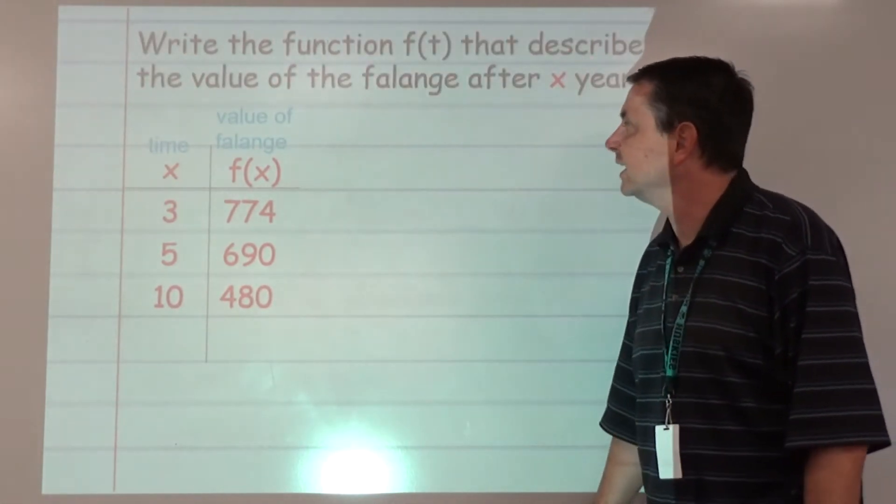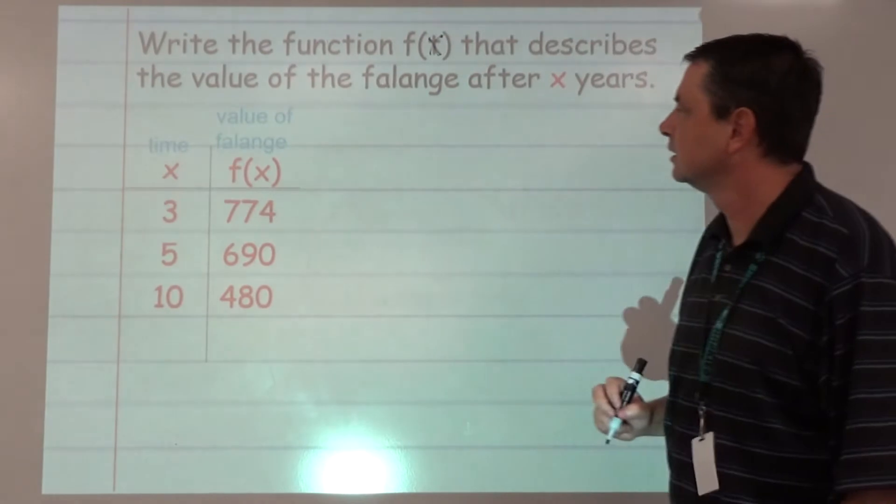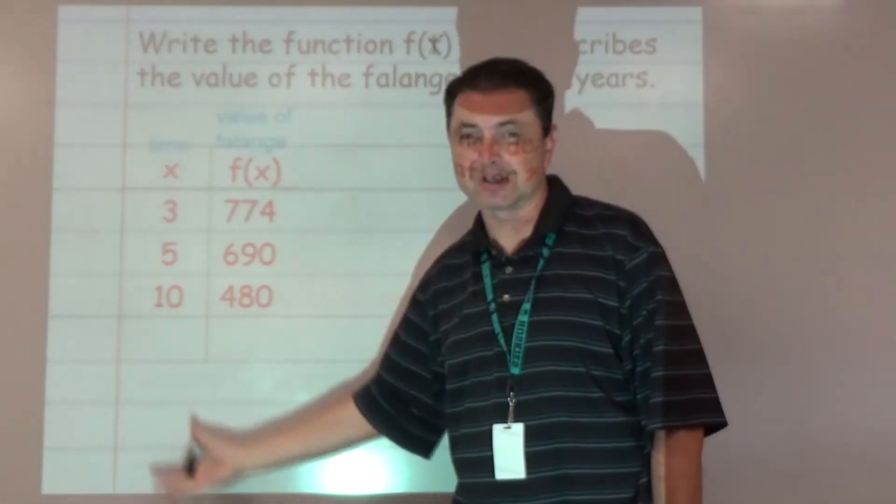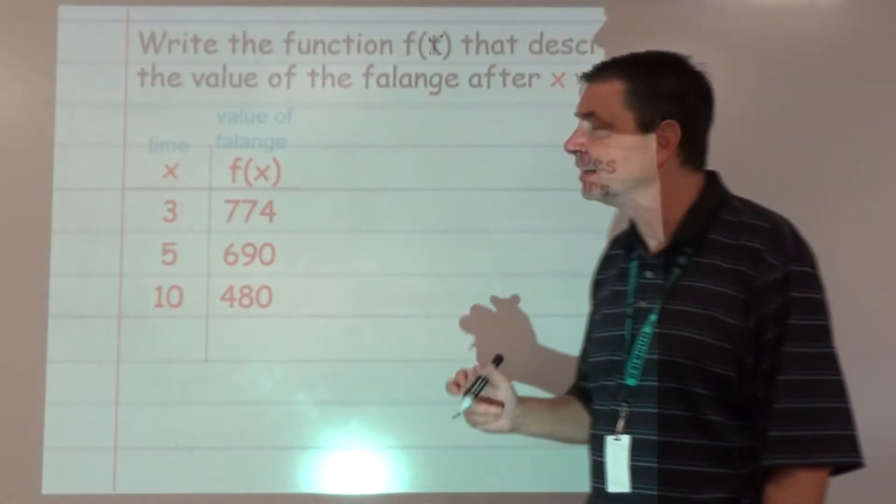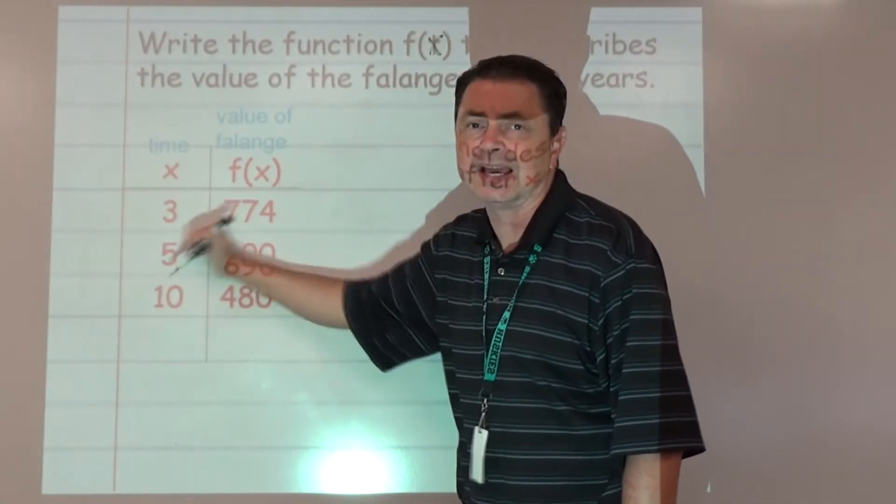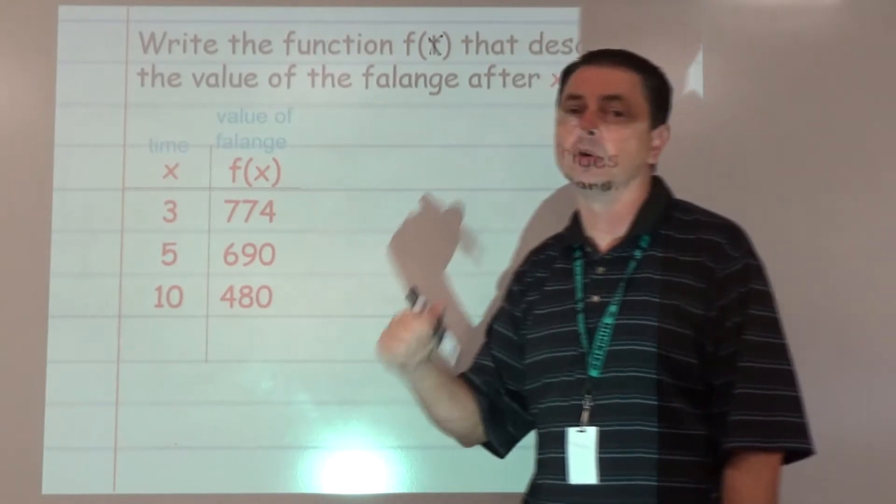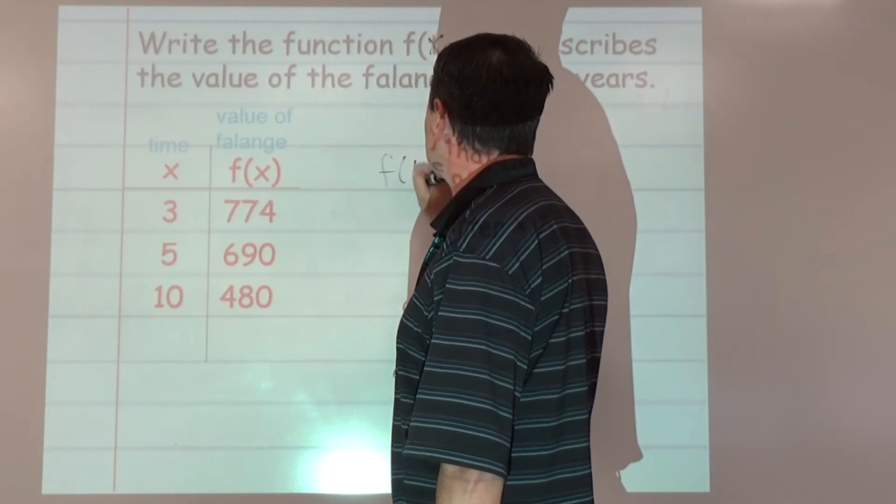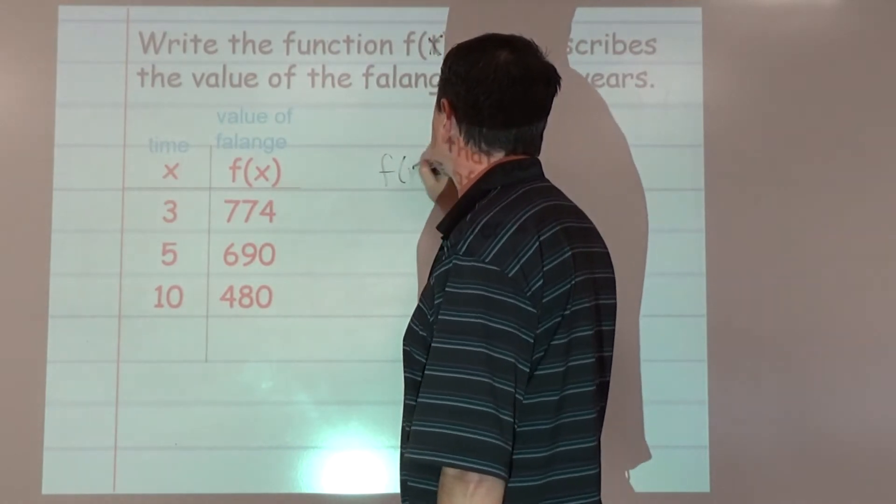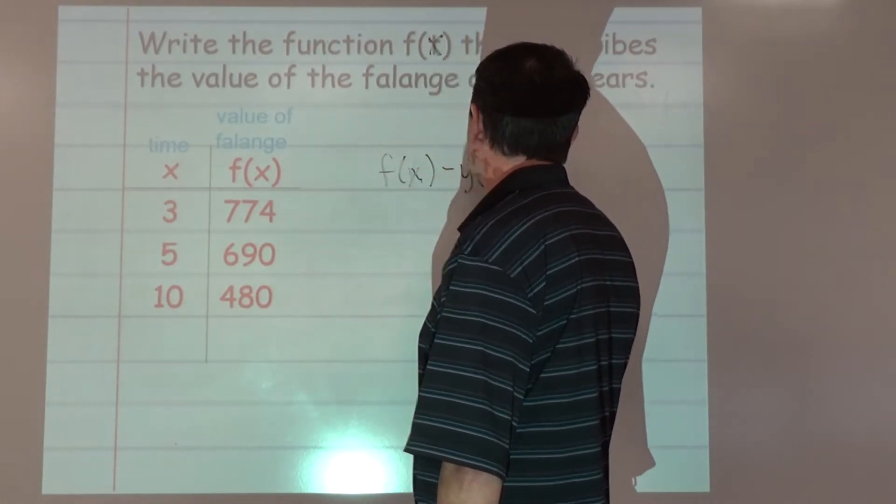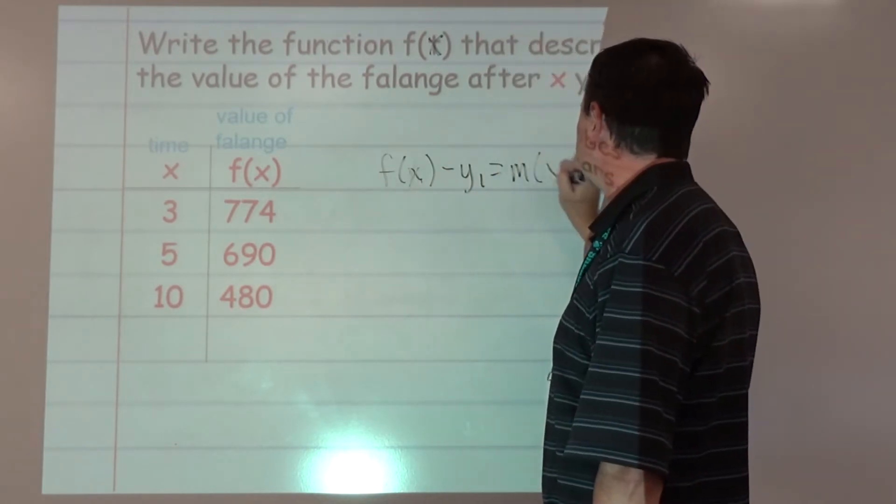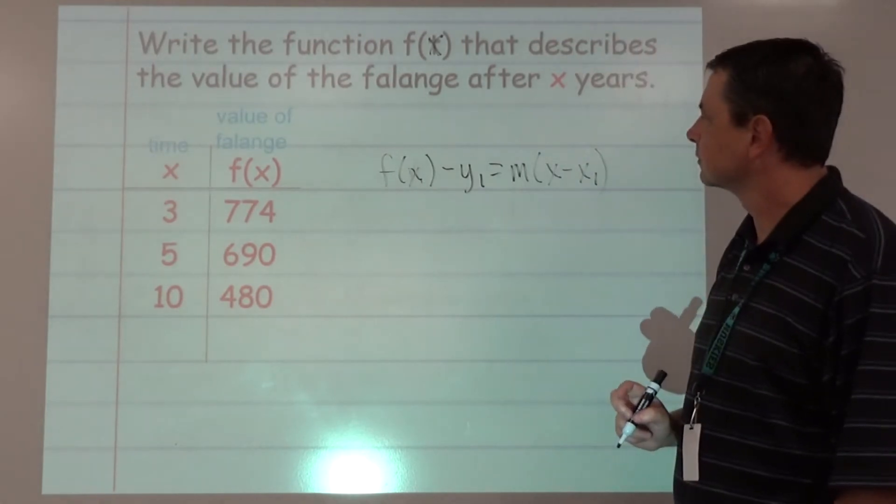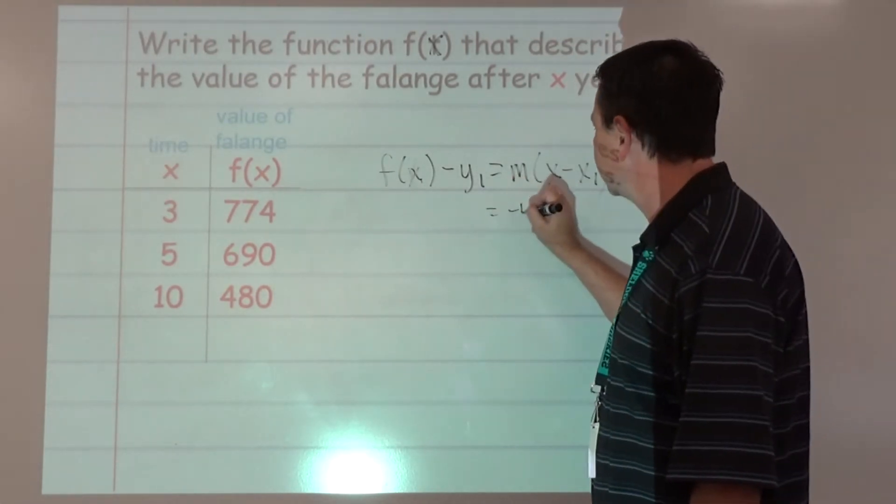Writing the function - it should say f(x). We want to use point-slope since we don't know the y-intercept. These are the data points we have. We know the slope. So f(x) minus y1 equals m times x minus x1. We know the slope was negative 42.